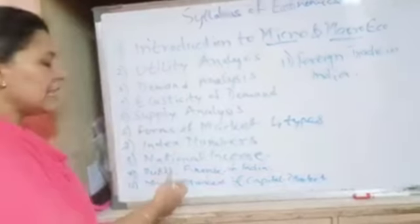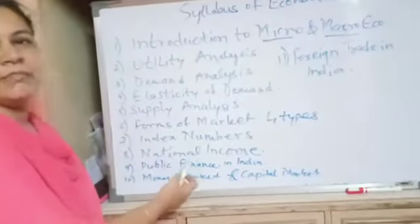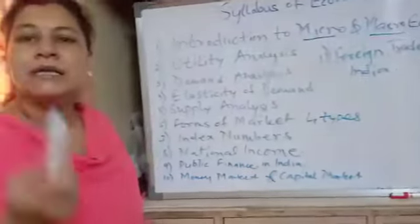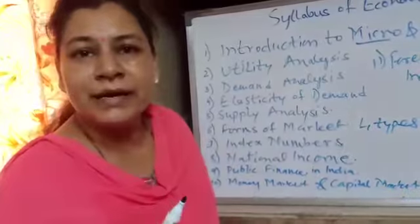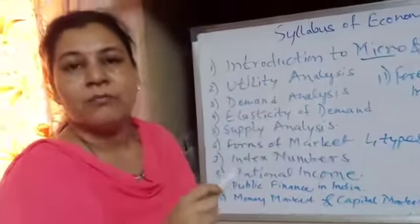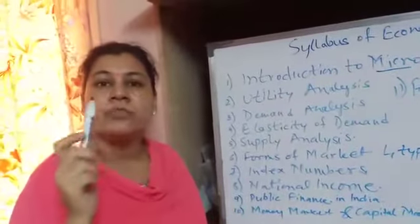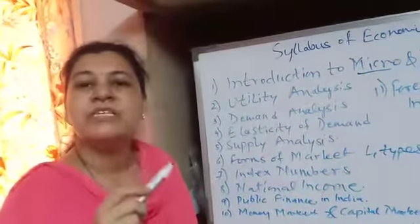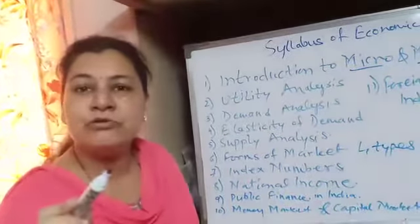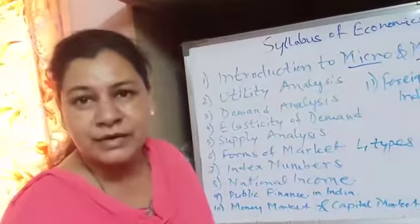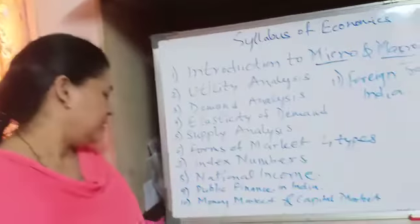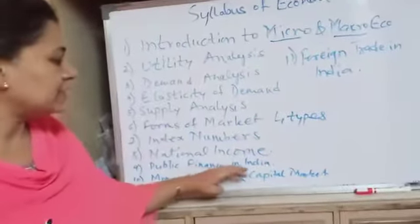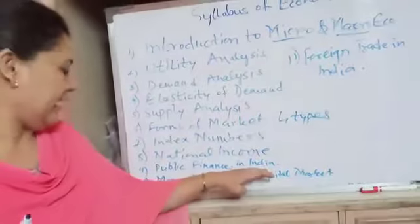Next is national income. National income is the income calculated from all the goods and services produced throughout the year by the nation. After that is public finance in India.